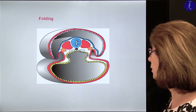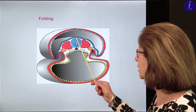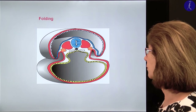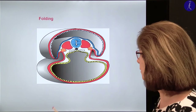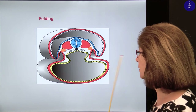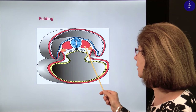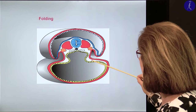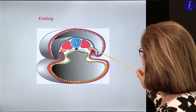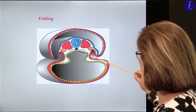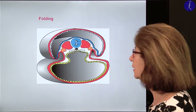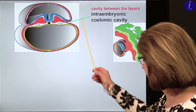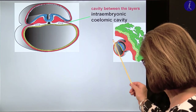Meanwhile the neural tube closes and the surface ectoderm covers the ectodermal side. In the mesoderm we now have the paraxial mesoderm with the somites and the intermediate mesoderm. But in the lateral plate mesoderm, two plates — the visceral and the parietal plate — border a cavity we call the intraembryonic coelom. This is the intraembryonic coelom here; this is the extraembryonic coelom.